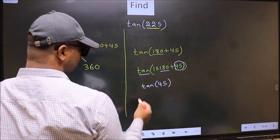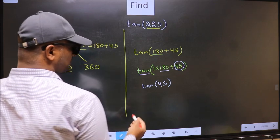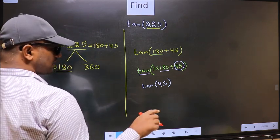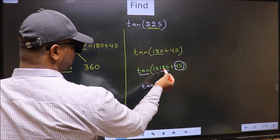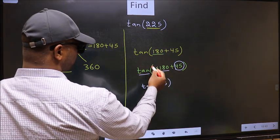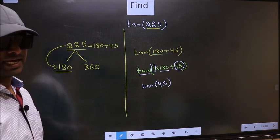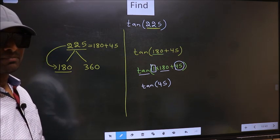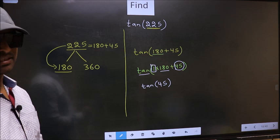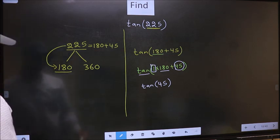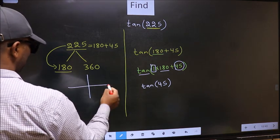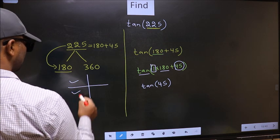Now the question is, will we get here plus or minus? To answer that, we should look at the number before 180. That is 1. And 1 is odd. And all the odd multiples of 180, they lie either in the second or in the third quadrant.